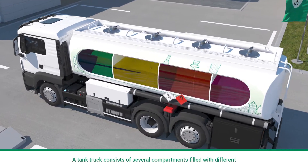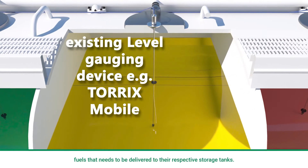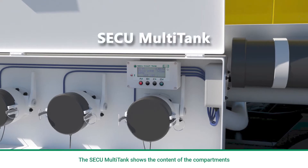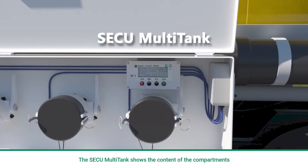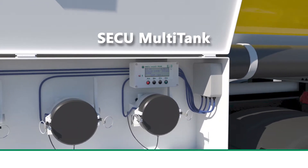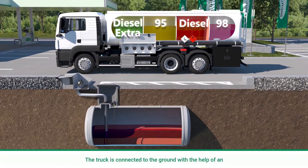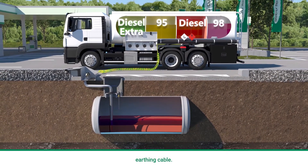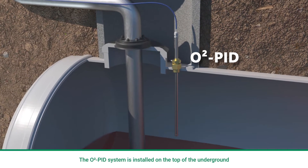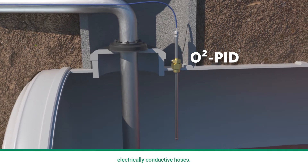A tank truck consists of several compartments filled with different fuels that need to be delivered to the respective storage tanks. The Seku Multitank shows the content of the compartments in the main display. The truck is connected to the ground with the help of an earthing cable. The O2 Pit system is installed on top of the underground tank and the connection to the tank truck is realized by electrically conductive hoses.